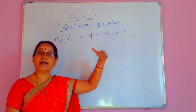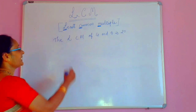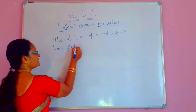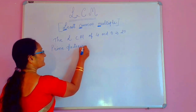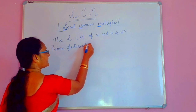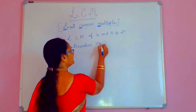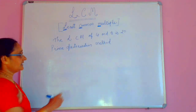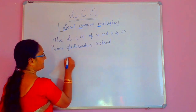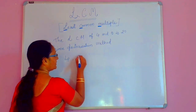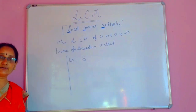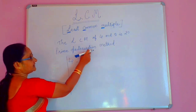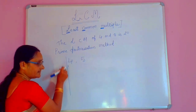This LCM can be found out in another method — that is the prime factorization method. Now let us do that prime factorization method. 4 and 5 are the given numbers. We have to find out the LCM by prime factorization method. Prime factorization method means we have to take prime numbers only here.